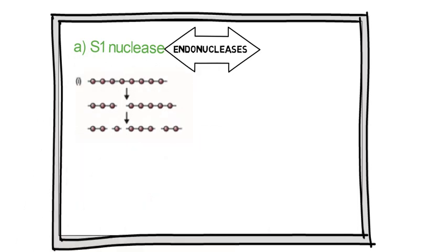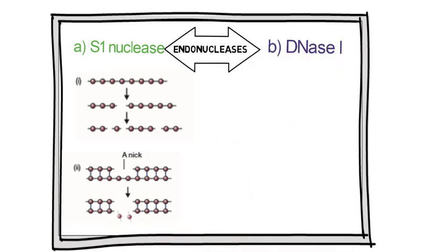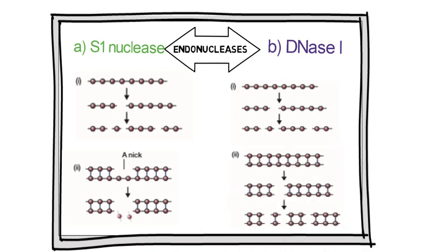S1 endonuclease from the fungus Aspergillus oryzae only cleaves single strands, whereas deoxyribonuclease I cuts both single and double-stranded molecules. DNase I is non-specific in that it attacks DNA at any internal phosphodiester bond, so the end result of prolonged DNase action is a mixture of mononucleotides and very short oligonucleotides. On the other hand, the special group of enzymes called restriction endonucleases cleave double-stranded DNA only at a limited number of specific recognition sites.